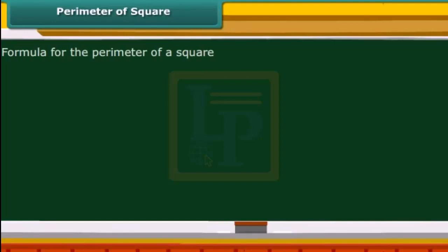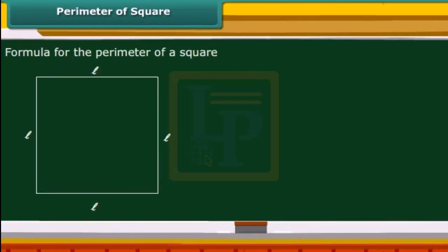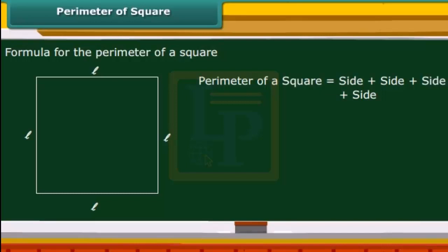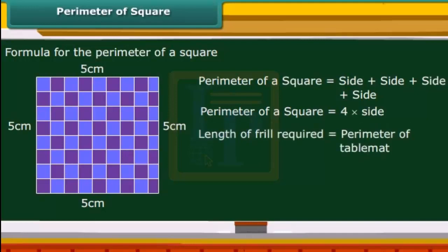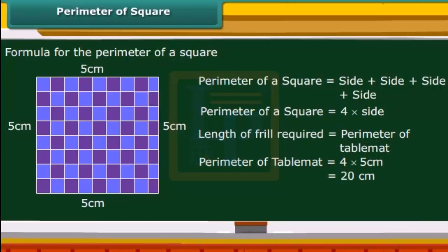Now let us work out the formula for the perimeter of a square. All 4 sides of a square are equal in length, therefore the perimeter of a square is 4 multiplied by its side. For example, to add frills to all sides of a square table mat with a side of 5 cm, the frill required equals the perimeter of the table mat, which is 20 cm.